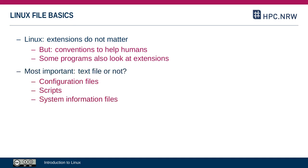One important distinction that matters at many points in Linux is whether a file is a text file or not. Linux makes pretty intensive use of text files as configuration files. Scripts, which also often happen in Linux, especially if you're on the cluster, are also text files. And many system information files — I've already mentioned the proc directory — all of those files in there are technically also text files.